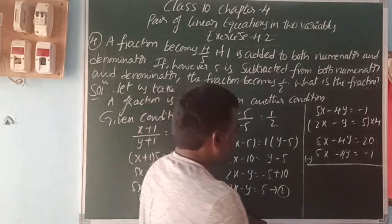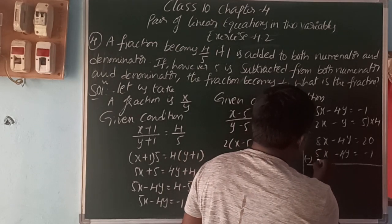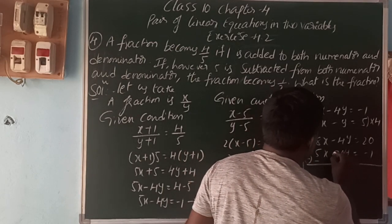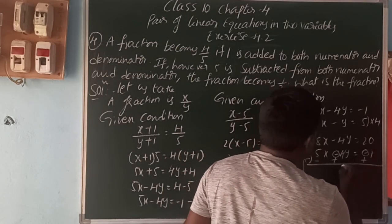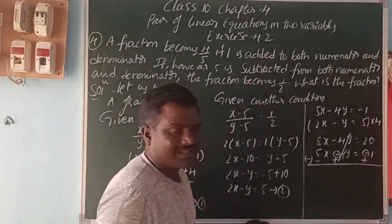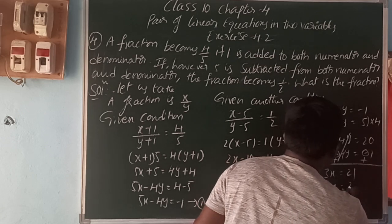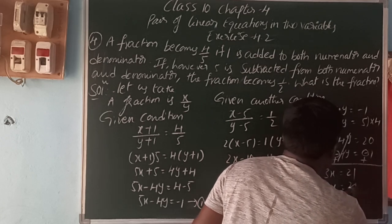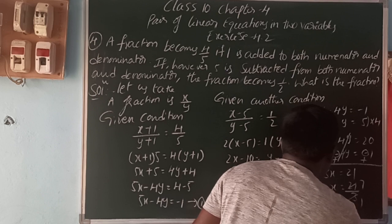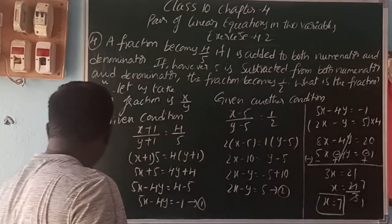So here, plus minus, minus plus, minus plus. So, 8x minus 5x is 3x, 20 plus 1 is 21. x is equal to 21 by 3. 3 ones are 3, 7s are 7. x is equal to 7. So, the value of x is 7.